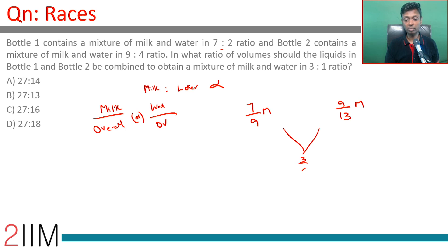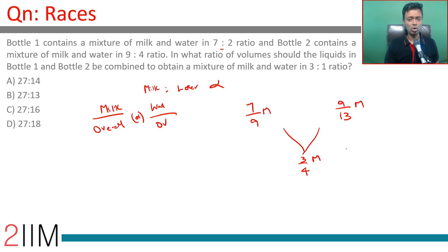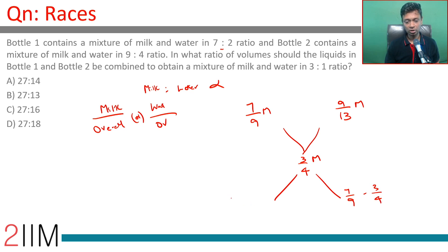Bottle 1 has 7/9 milk. This is mixed with bottle 2, which has 9/13 milk, in some ratio, to give us 3/4 milk in the final mixture. This is the allegation approach: 7/9 milk mixed with 9/13 milk to give 3/4 milk.